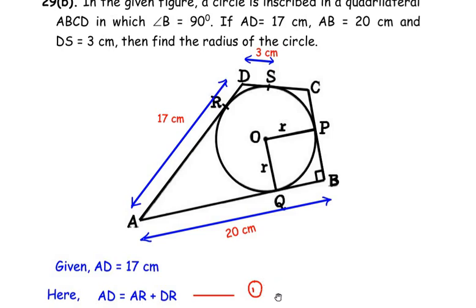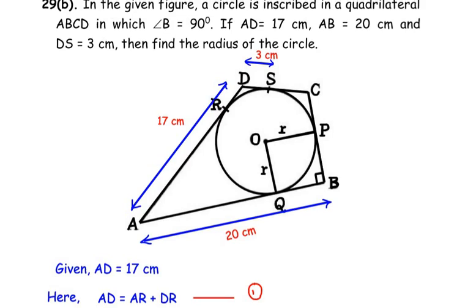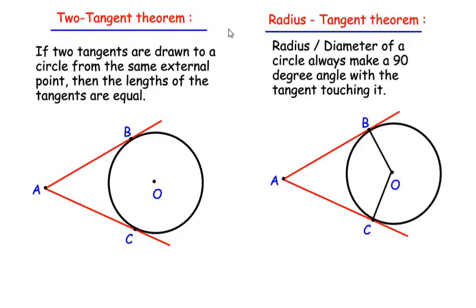Before we proceed, we need to learn two theorems: the two tangent theorem and the radius tangent theorem. The two tangent theorem states that if two tangents are drawn to a circle from the same external point, then the lengths of the tangents are equal. Here, a circle with center O has an external point A from which two tangents touch the circle at points B and C. If AB is 10 cm, then AC is also 10 cm.